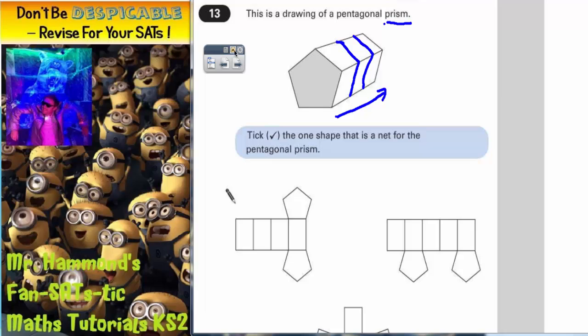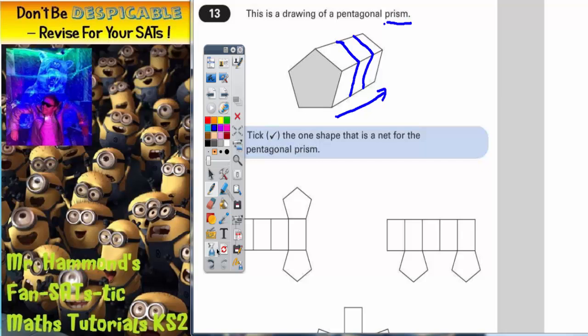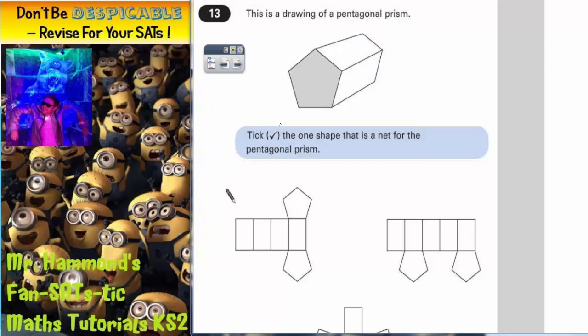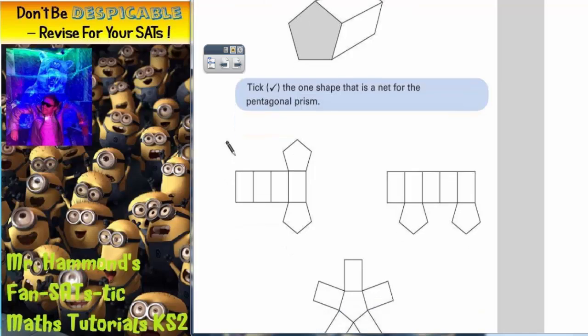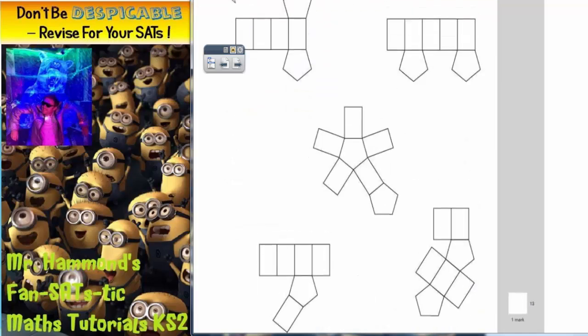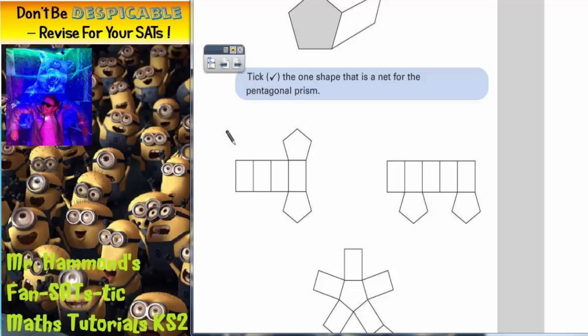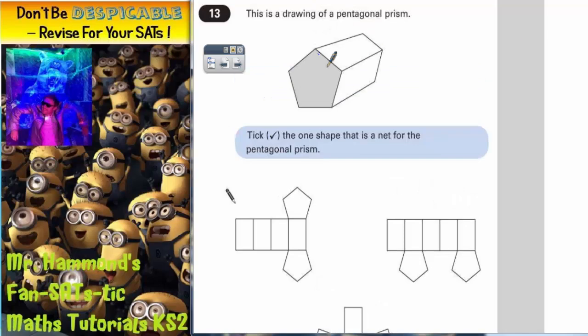So the question is what have we got to do? Well it says of all the nets here, take the one shape that is a net for the pentagonal prism and we've got five to choose from. Well if this was unfolded what would we have? Well we'd have rectangles around the sides and there are five sides to this. So we would have five rectangles.